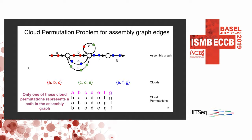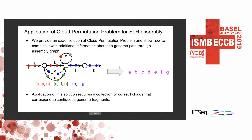Only one of the cloud permutations represents any path in the assembly graph; all the other ones do not traverse any valid paths. So we can remove them and keep the last cloud permutation, which is supposedly the correct ordering of edges in the assembly graph. To summarize, in our method we provide an exact solution of the cloud permutation problem and show how to combine it with additional information about the structure of the assembly graph. However, this solution requires a collection of correct clouds that correspond to continuous genome segments or subpaths of the genome path.